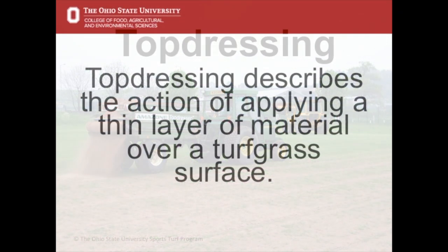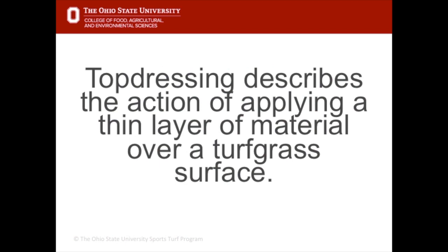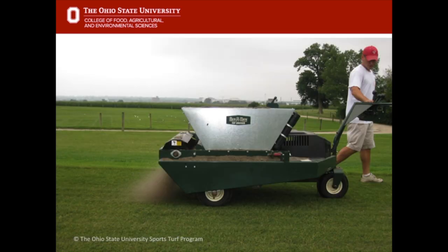Top dressing describes the action of applying a thin layer of material over a turfgrass surface. The material used for top dressing turf is usually sand, soil, compost, or a combination of all.